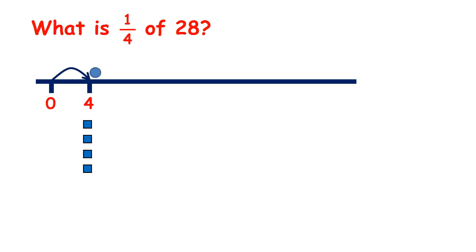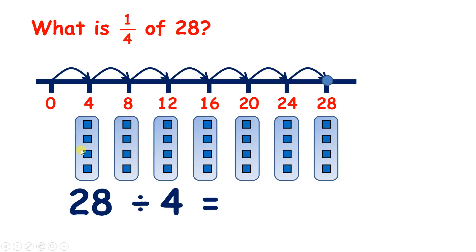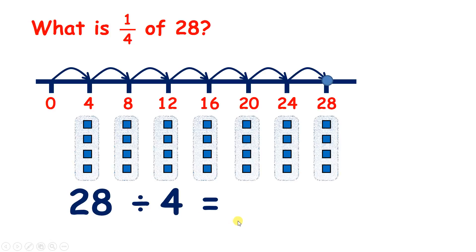So we can count up in steps of four until we get to twenty-eight. Four, eight, twelve, sixteen, twenty, twenty-four, twenty-eight. So we have twenty-eight divided by four, which is the same as finding a quarter of twenty-eight. So we have seven groups of four, so twenty-eight divided by four is seven.